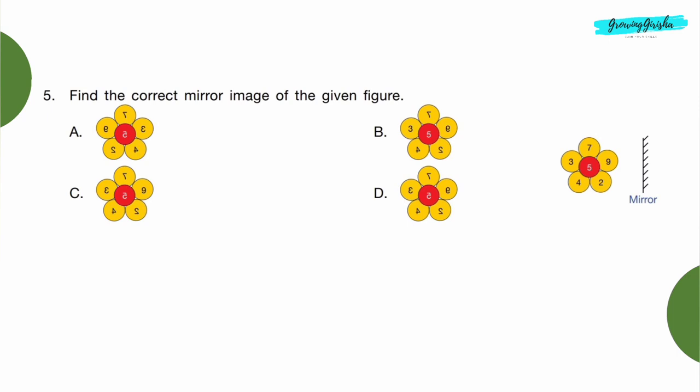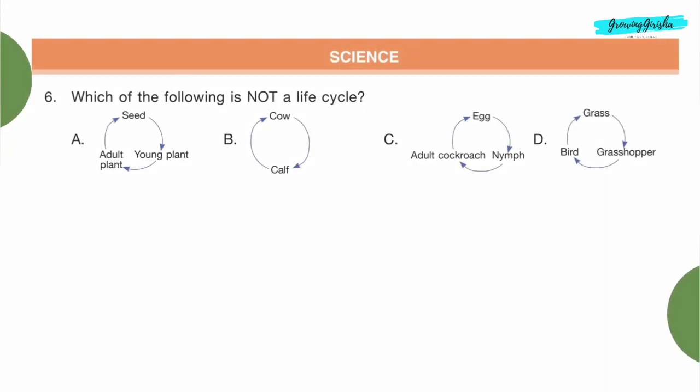So Option A: wheat, rice, and sugar is the correct answer. Question 5: Find the correct mirror image of the given figure. Option A. Science. Question 6: Which of the following is not a life cycle? Option C: seed turns into a young plant and young plant turns into an adult plant, so A is correct. Cow gives birth to calf and calf becomes cow, B is also correct. Third, egg hatches into nymph and nymph turns into adult cockroach, this is also correct.